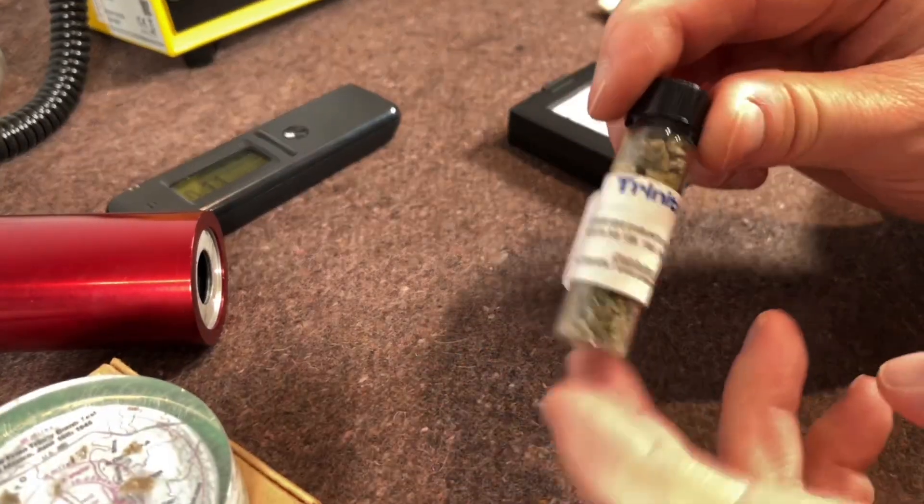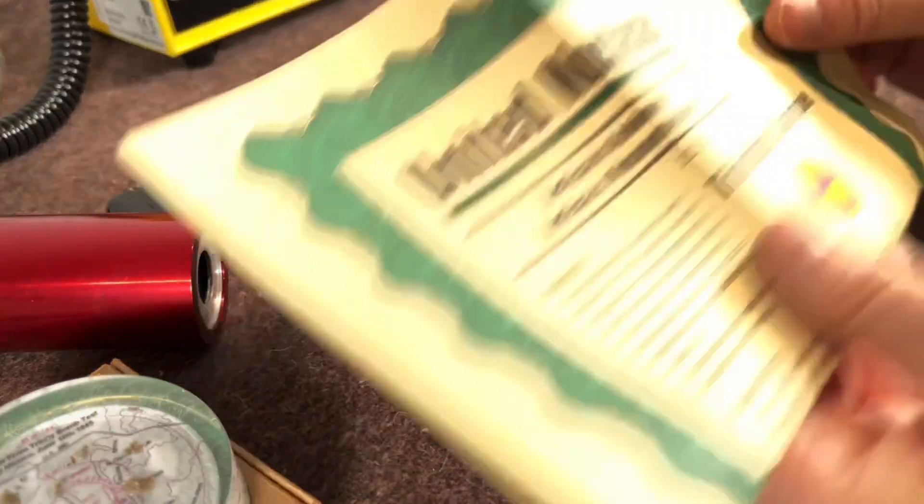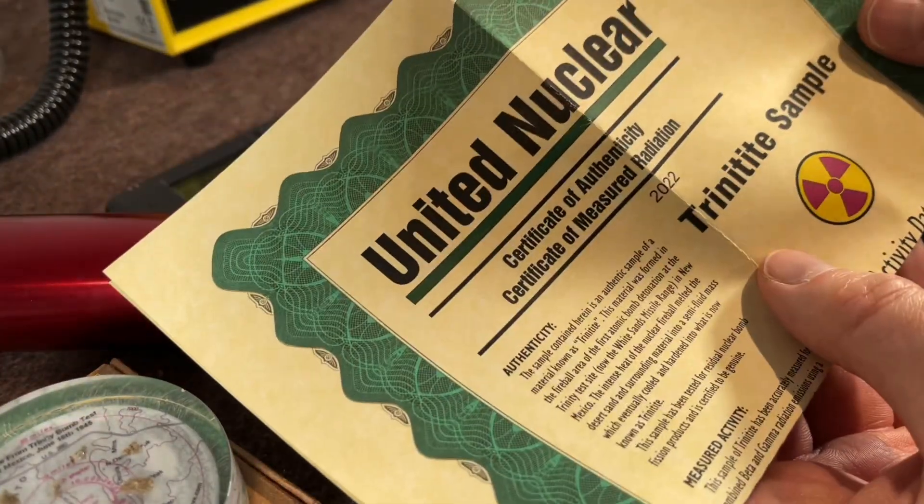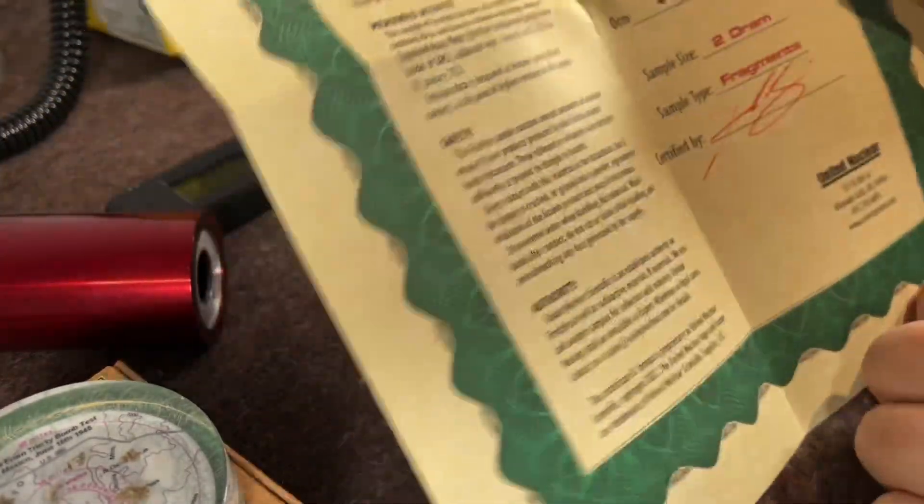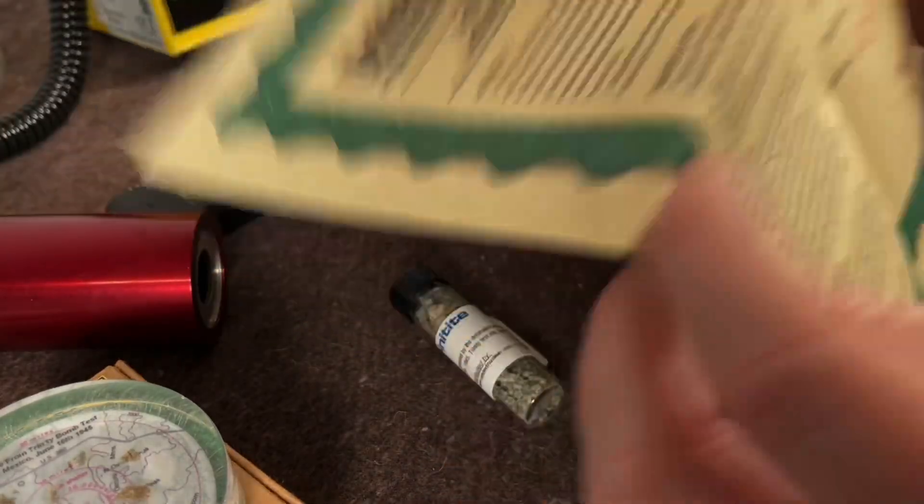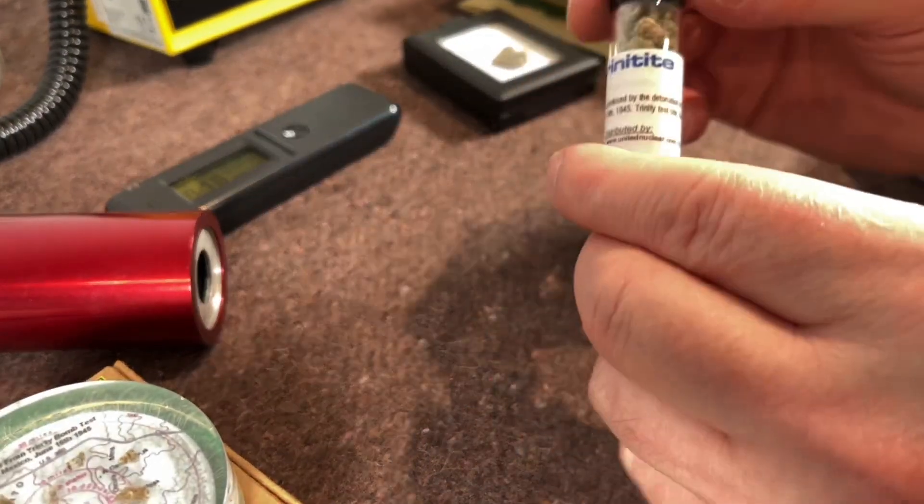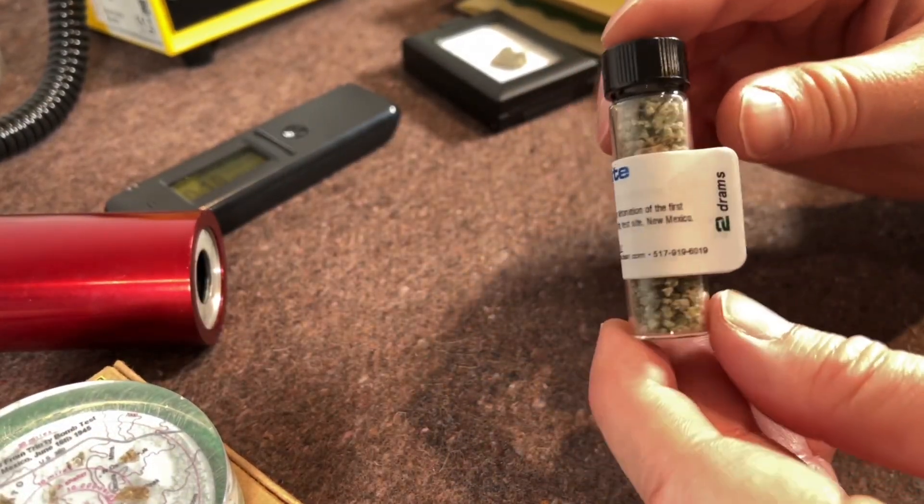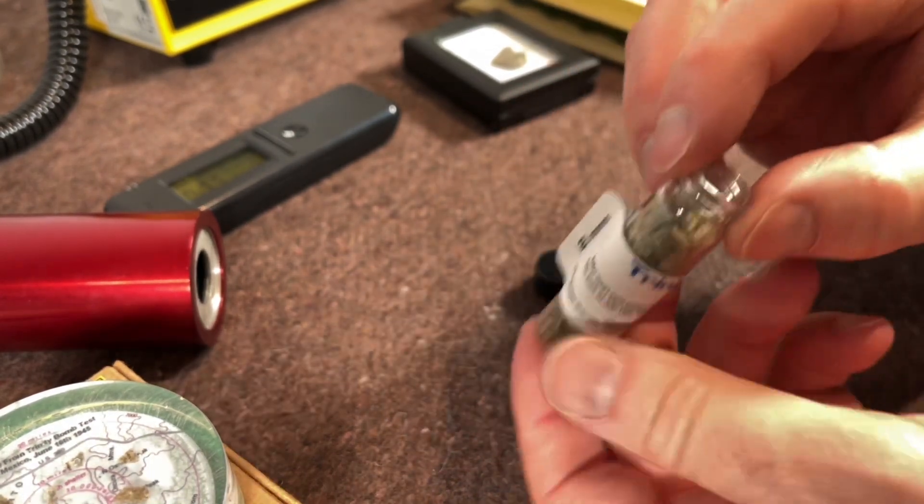Next is from United Nuclear. Now United Nuclear are based over in America and they give you a full sheet telling you about the activity and that it is authentic. They're the most trusted people to get this. They do quite a lot of sources. Most of them did not ship outside the continental USA so I was quite lucky that they did post this for me. You can see there it's quite a nice little vial of Trinitite.